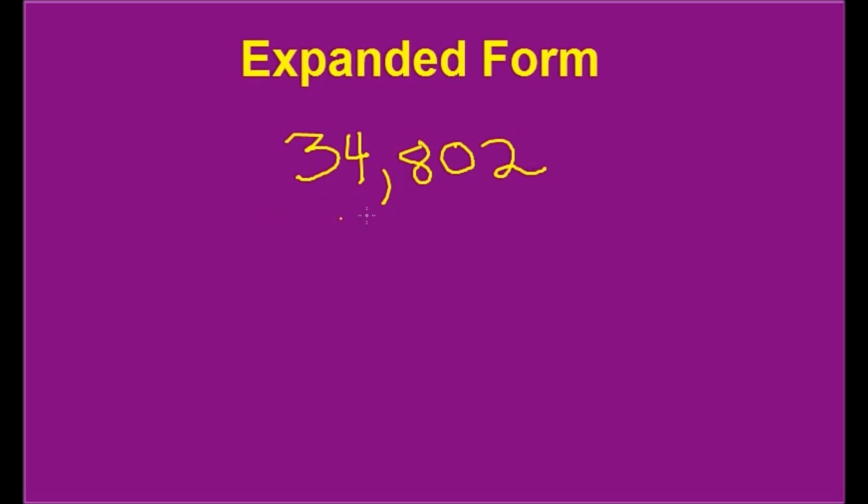You have to remember the value of each of these numbers. Remember from our review we just did, this 2 is in the ones column, so it's worth 2. And this 4 is in the thousands column, so it's worth 4,000. So when we write numbers in expanded form, we think about their true value. So what is this 3 worth? Well, it's in the ten thousands column, so 3 ten thousands would make 30,000.